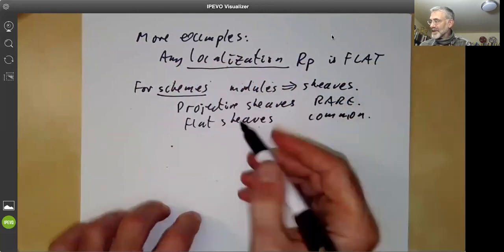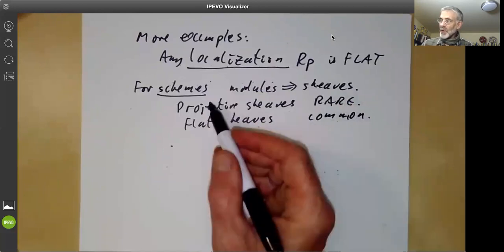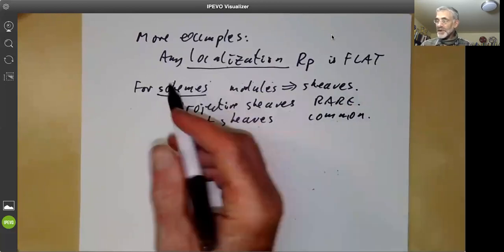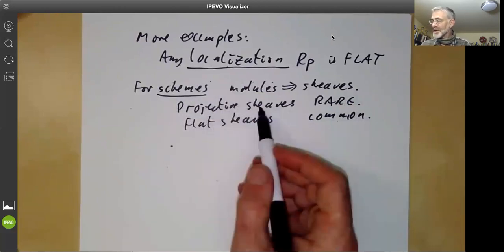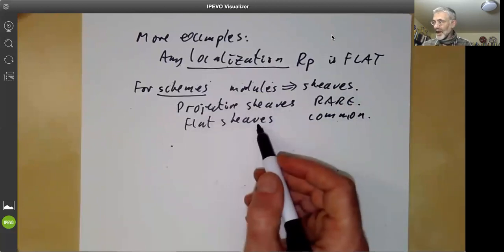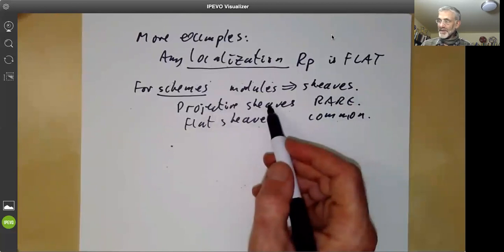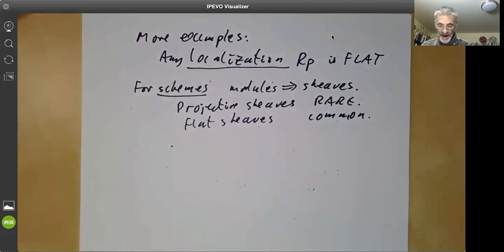So for rings, flat modules are somewhat more common than projective modules. But when you start doing algebraic geometry and doing schemes, projective sheaves are almost nonexistent and flat sheaves become even more important. Needless to say, free sheaves and stably free sheaves and so on are also quite rare.